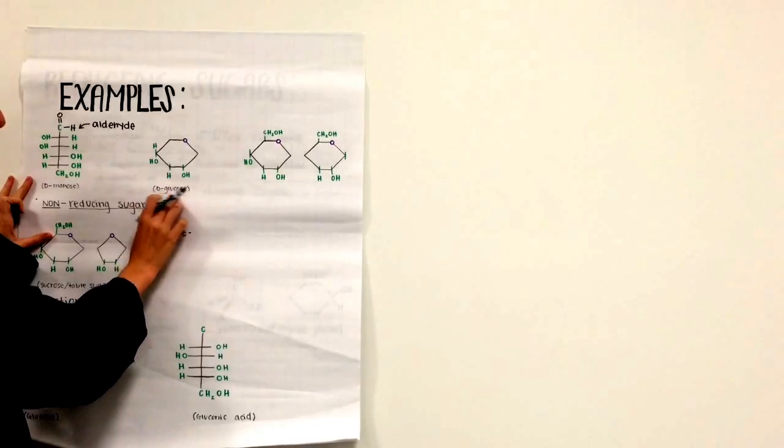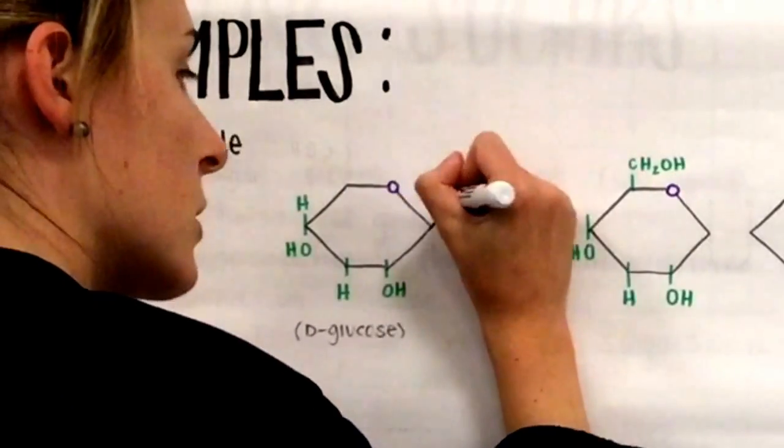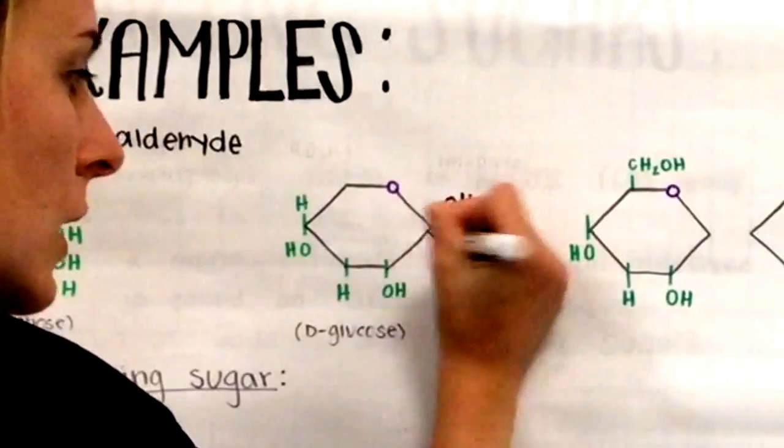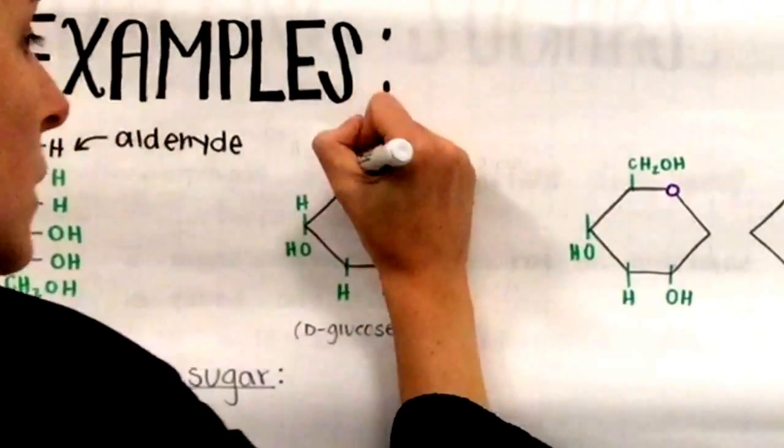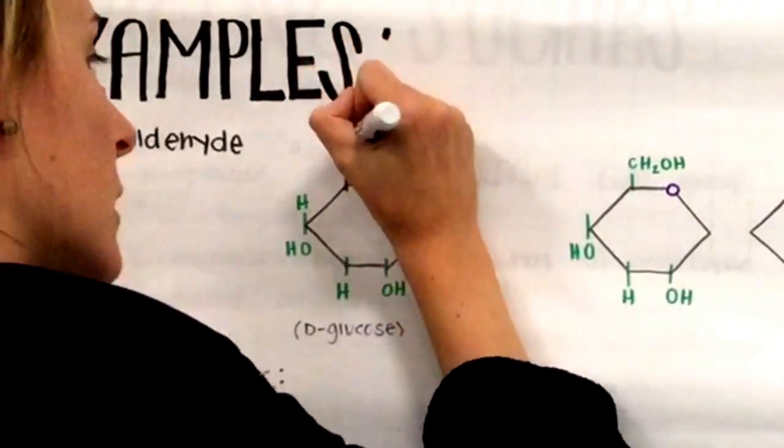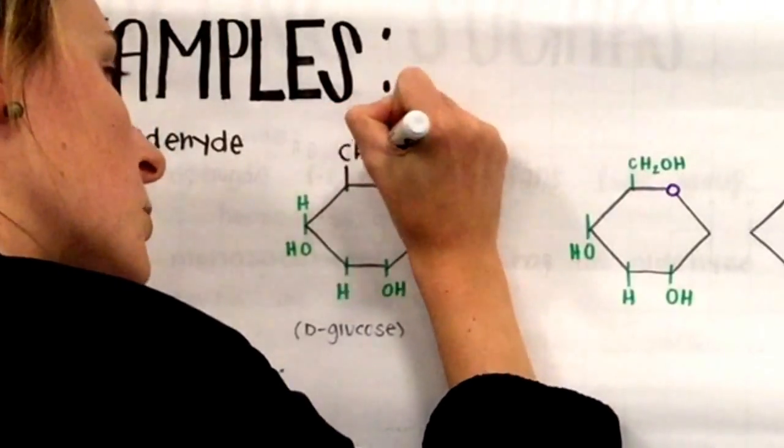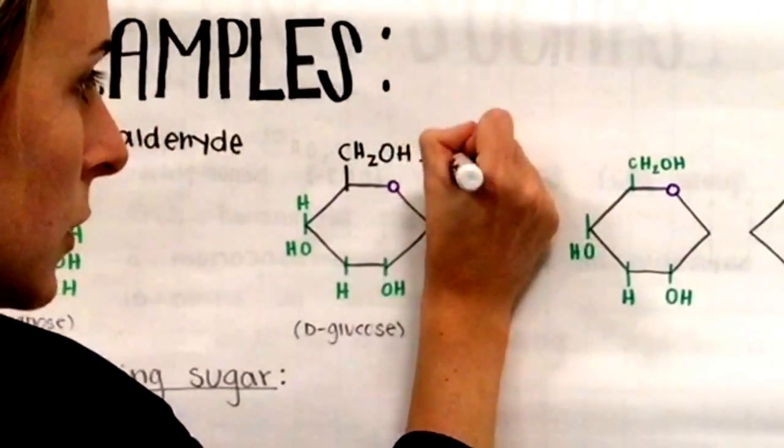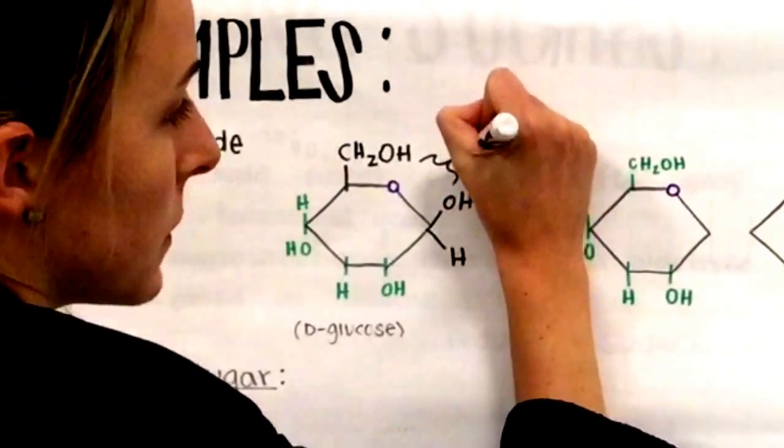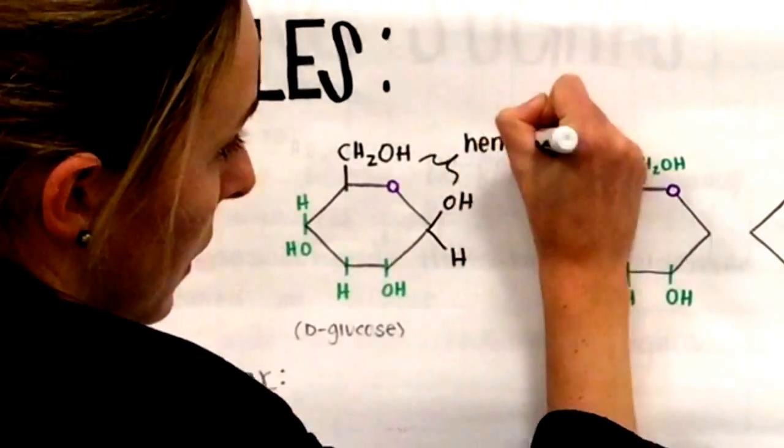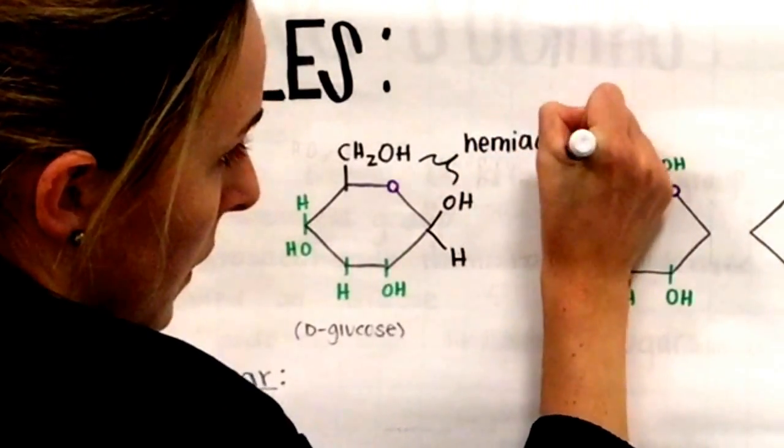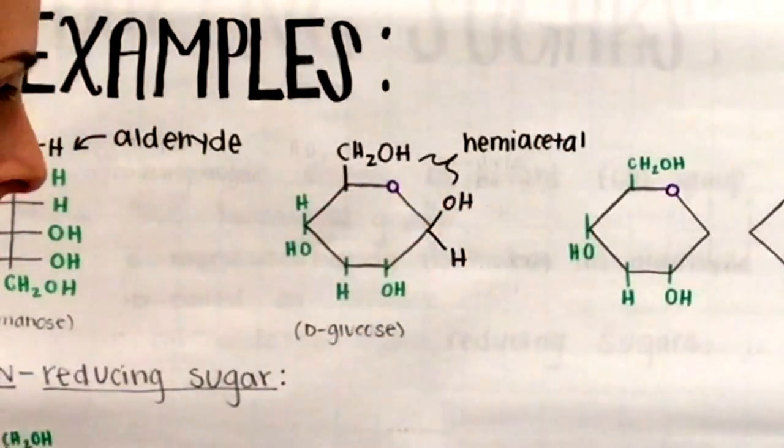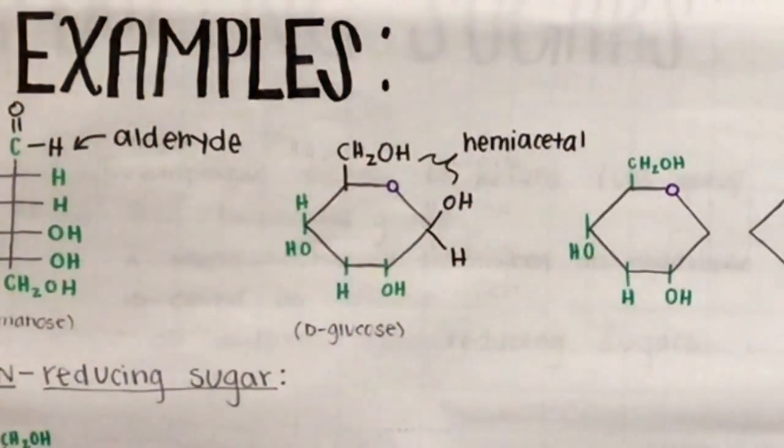Here we have D-glucose. The OH is on top and H on the bottom. Right here we have CH2OH. Right here you can see that there's a hemiacetal. It's a carbon bound to both an OH and an OR. A hemiacetal is a reducing sugar.